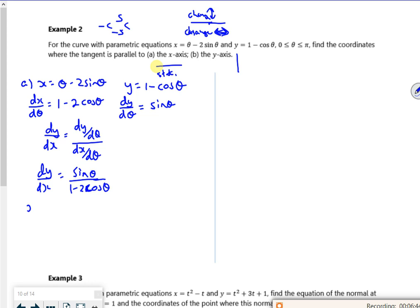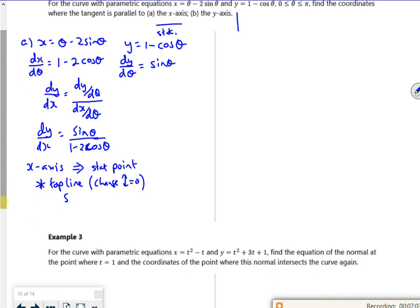So what I'm saying is that the top line is equal to zero. So for the x axis, I'm saying it's just a normal stationary point. But what I'm actually saying is that the top line, which is the change going up, is equal to zero. So I've got sin theta is equal to zero. And that would give me out zero and pi.